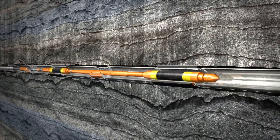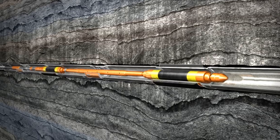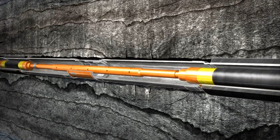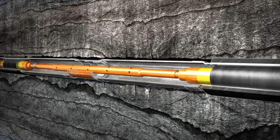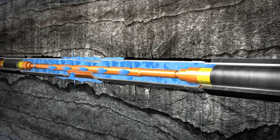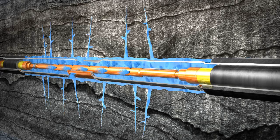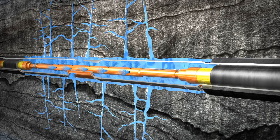The POSIFRAC straddle system runs through restrictions and can be set in larger diameters. It is also capable of providing zonal isolation in fracturing or refracturing existing multi-stage completions.